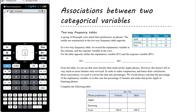Today we want to look at associations between two categorical variables. Previously we've been looking at univariate data — just one variable — and we're beginning now to look at bivariate data, comparing two different variables. Over the next three lessons we want to look at how we can determine whether or not there is or may be an association between the two variables. Today we're going to look at two categorical variables.